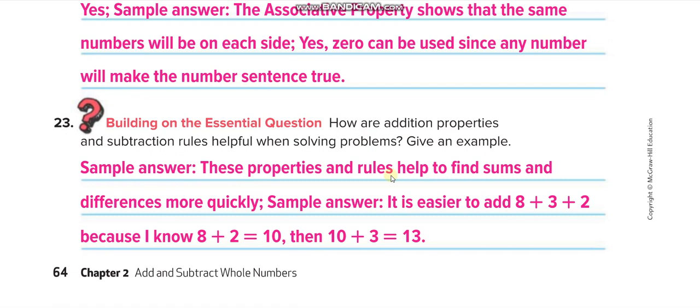These properties and rules help to find sums and differences more quickly. It is easier to add, like see if I want to add 8 plus 3 plus 2. If I start from the beginning, 8 plus 3, maybe I will think a little bit. But if I change the place of 2 and 3, I bring the 2 here.